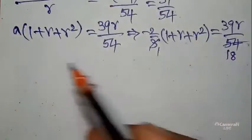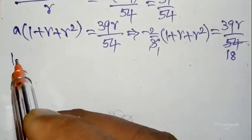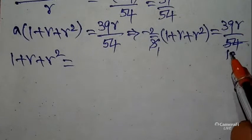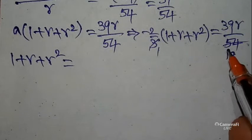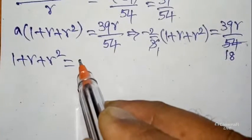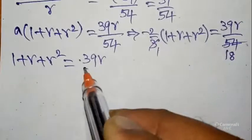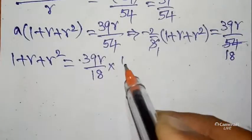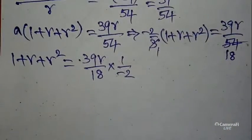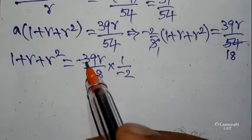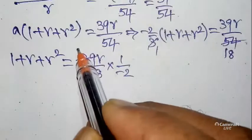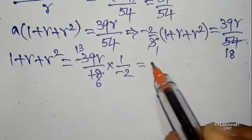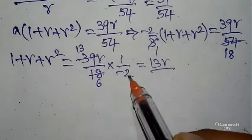After cross multiplication we get: 1 + r + r² = 39r/54 divided by (−2/3). Simplifying: 3 into 39 is 39, 3 into 18 is 54. After cancellation of 3s: 39/54 becomes 13/18. Then dividing by minus 2 gives 13r/18 × (−1/2) = −13r/36. So: 1 + r + r² = −13r/36.